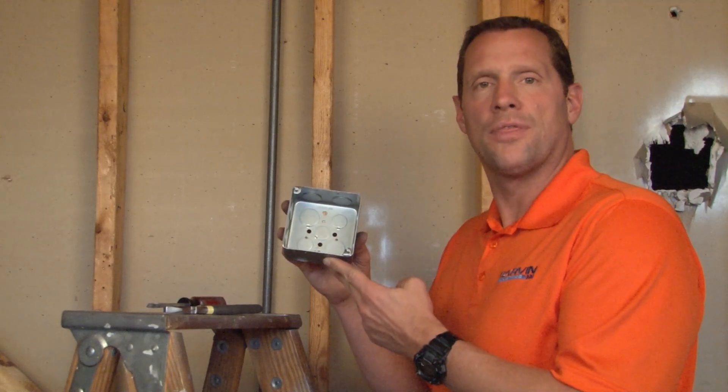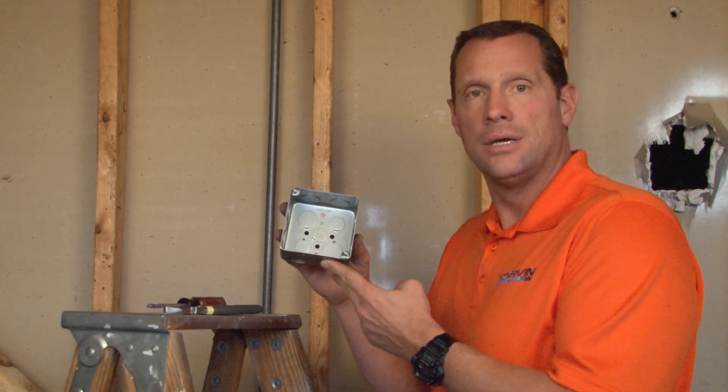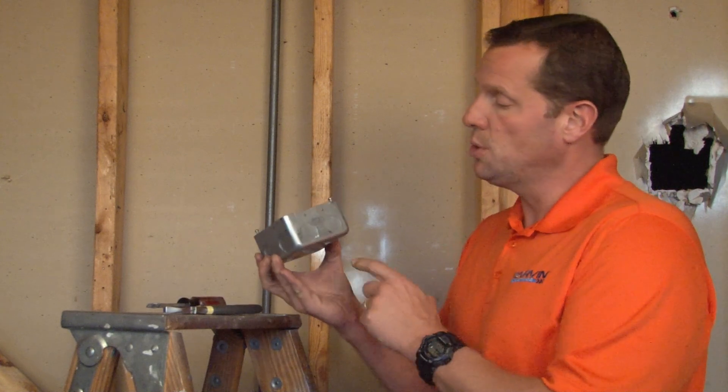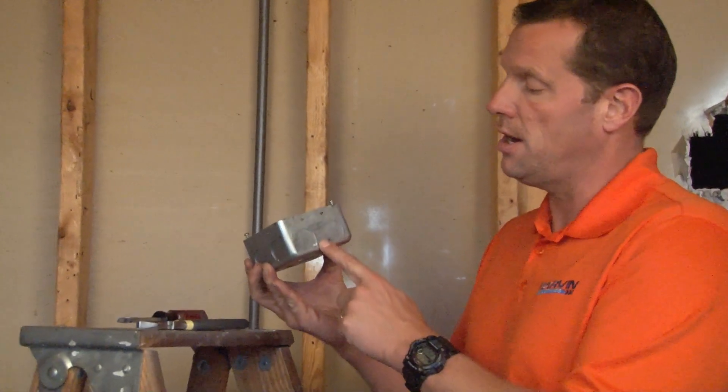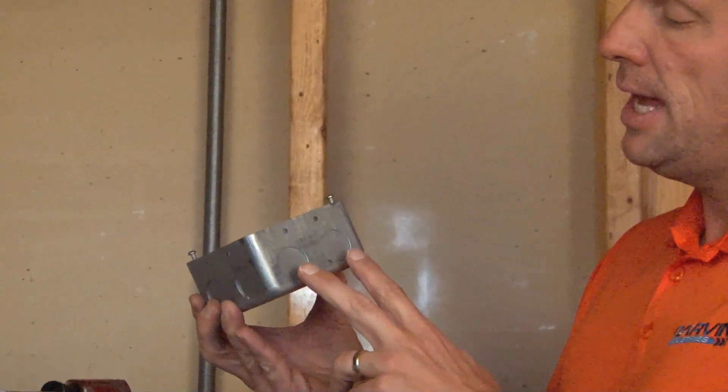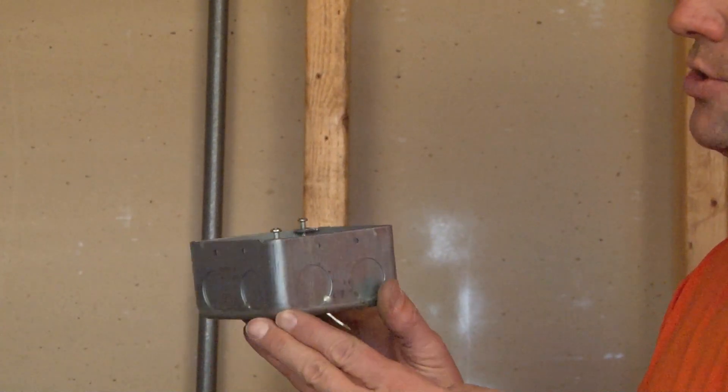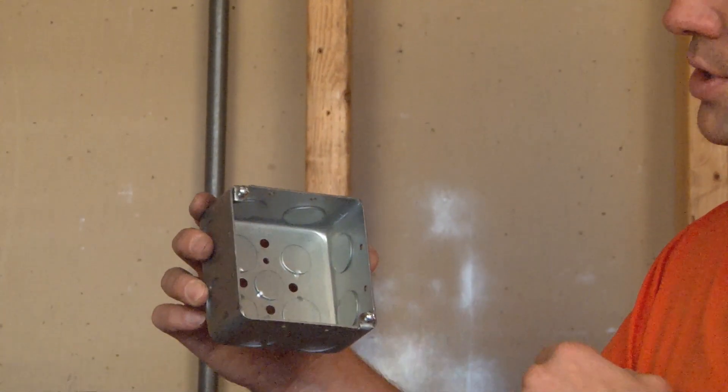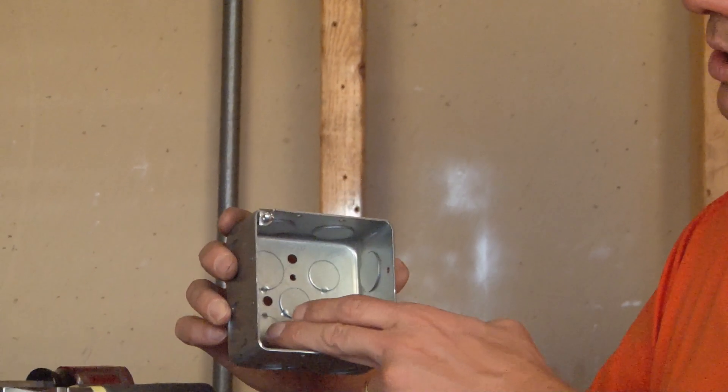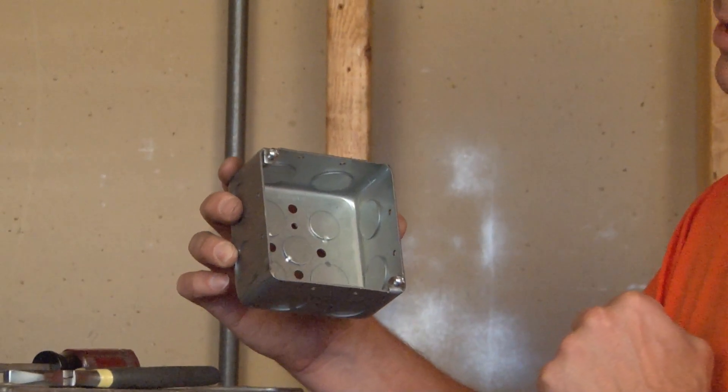Part number 52171 3-4 DR is a 4-inch square box that is 2 1/8 inches deep for extra wire capacity, and it has two 3/4-inch knockouts on all four sides. It also has two 3/4-inch knockouts in the bottom, as well as three 1/2-inch knockouts diagonally.